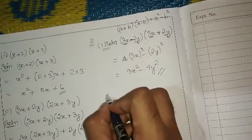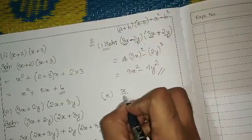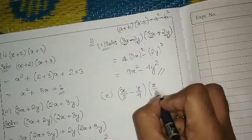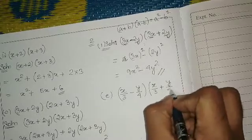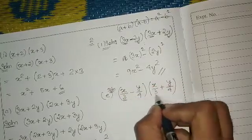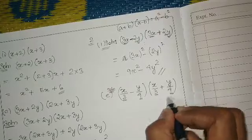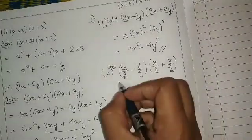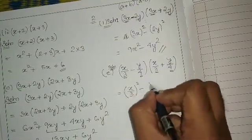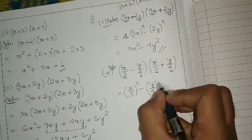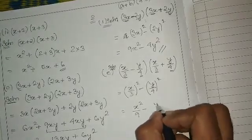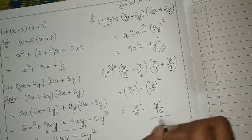Now question number 2 part e: x by 3 minus y upon 4 times x by 3 plus y upon 4. Similarly, these two expressions are the same with opposite signs, so it becomes a minus b into a plus b equals a square minus b square. Here a is x by 3 and b is y by 4, so the answer is x square by 9 minus y square by 16.